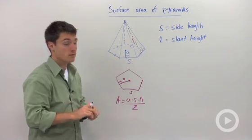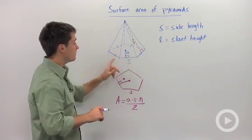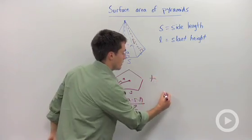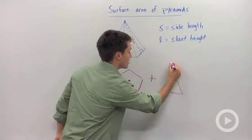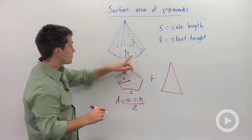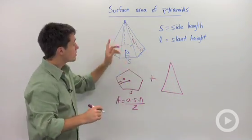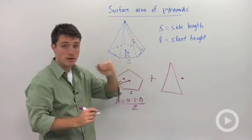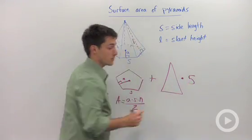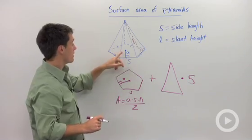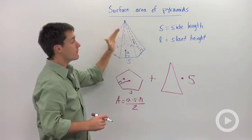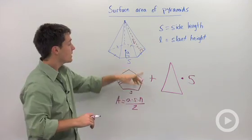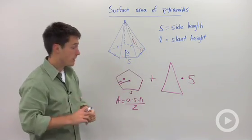Since this is a regular pentagon, we can assume that the five triangles that are formed are all going to be congruent to each other. So once you calculate the area of the base, you're going to have to add in the area of this triangle times however many triangles you have. So let's say you had a heptagon — you're going to have seven triangles that are all going to be congruent to each other, as long as your heptagon is regular.